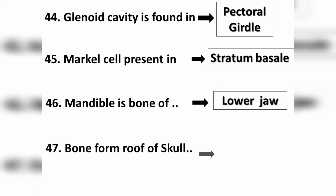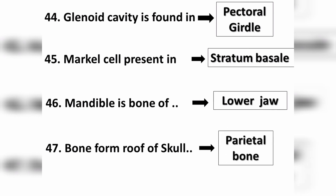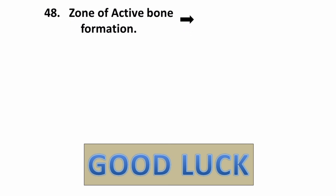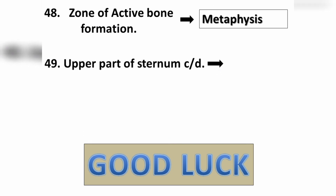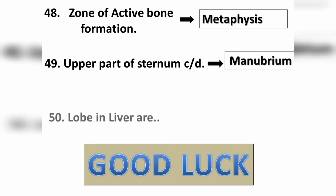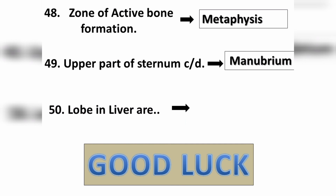Question number forty-seven: the bone that forms the roof of the skull is the parietal bone. Question number forty-eight: the zone of active bone formation is also called the metaphysis. Question number forty-nine: the upper part of the sternum is called the manubrium. Question number fifty: the lower ribs are two in number (floating ribs).